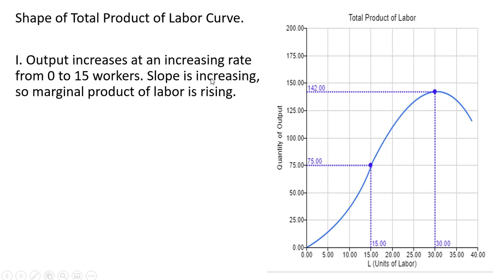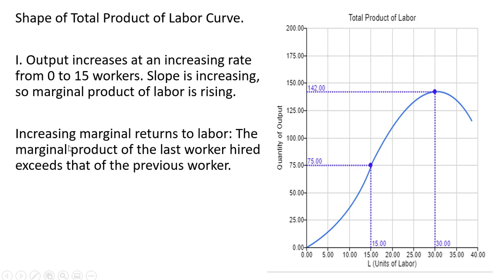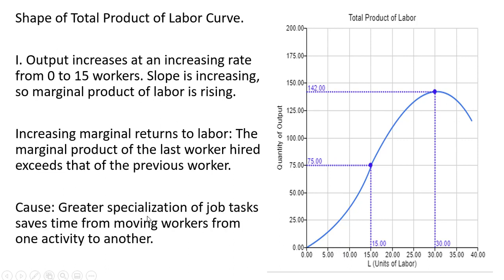Now let's look at the shape of the total product of labor curve. We can think of it breaking down into three sections. In section 1, output increases at an increasing rate from 0 to 15 workers. We're measuring units of labor on the horizontal axis and the firm's total output on the y-axis. Between 0 and 15 workers, output goes up exponentially — we have increasing marginal returns to labor. The marginal product of the last worker hired exceeds that of the previous worker, because of greater specialization of job tasks, saving time moving workers from one activity to another. Instead of one worker doing 10 different things, we can have each worker specialize in one or two job tasks.